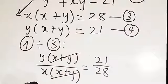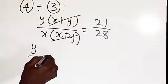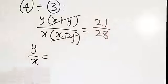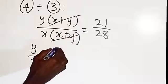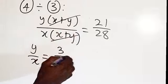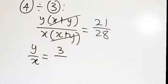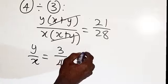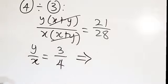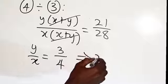The (x + y) terms cancel, giving us y over x equals 21 divided by 28. Reducing using 7 as a common factor: 21 divided by 7 is 3, and 28 divided by 7 is 4. So y over x equals 3 over 4.